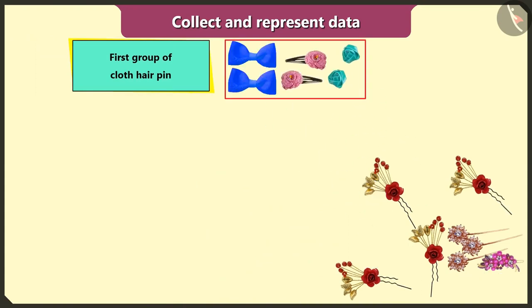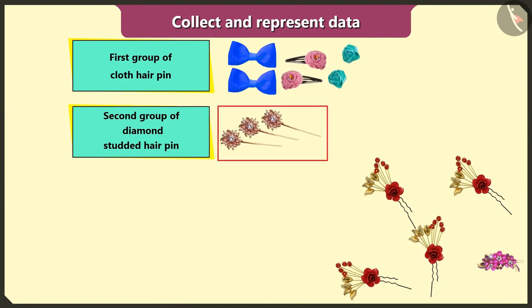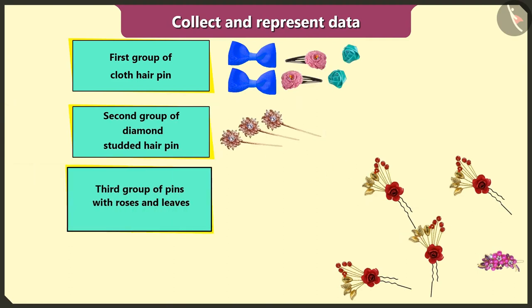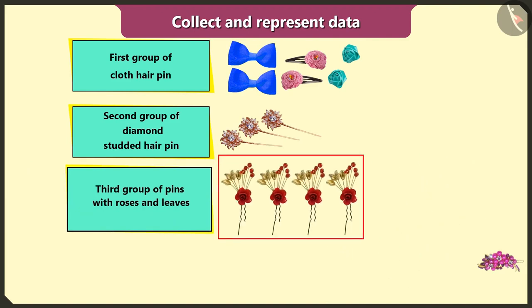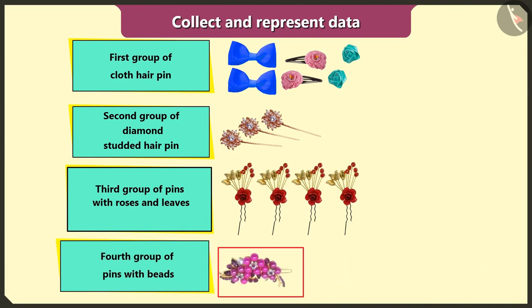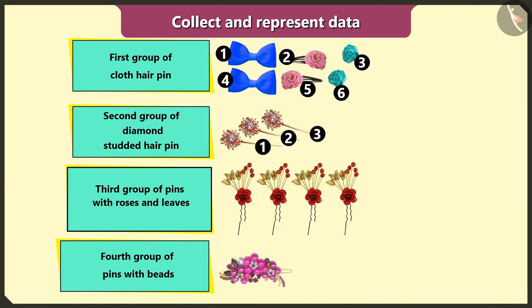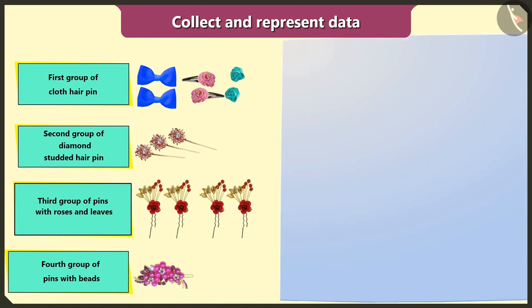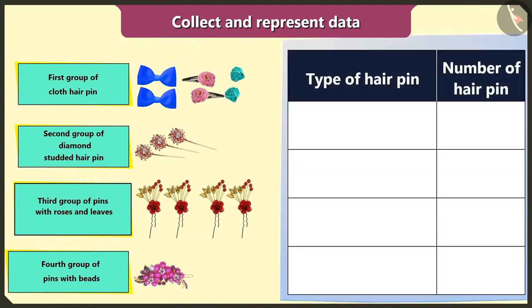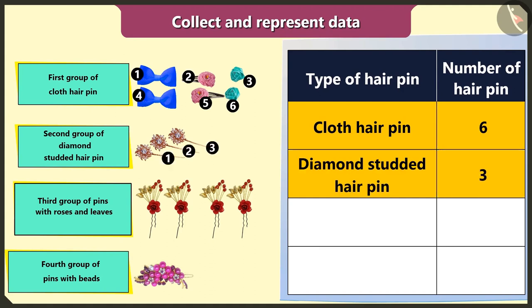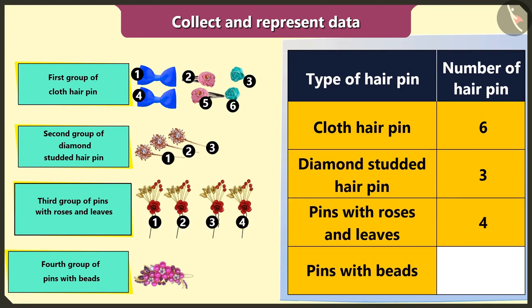First group of cloth hairpins. Second group of diamond studded hairpins. Third group of hairpins with roses and leaves. Now I will count the hairpins in each group. I have six hairpins made of cloth, three diamond studded hairpins, four hairpins with roses and leaves, and one big hairpin with beads. Now I will represent all the data by making a table. The number of cloth hairpins is six, diamond studded is three, hairpins with roses and leaves is four, and hairpin with beads is one.